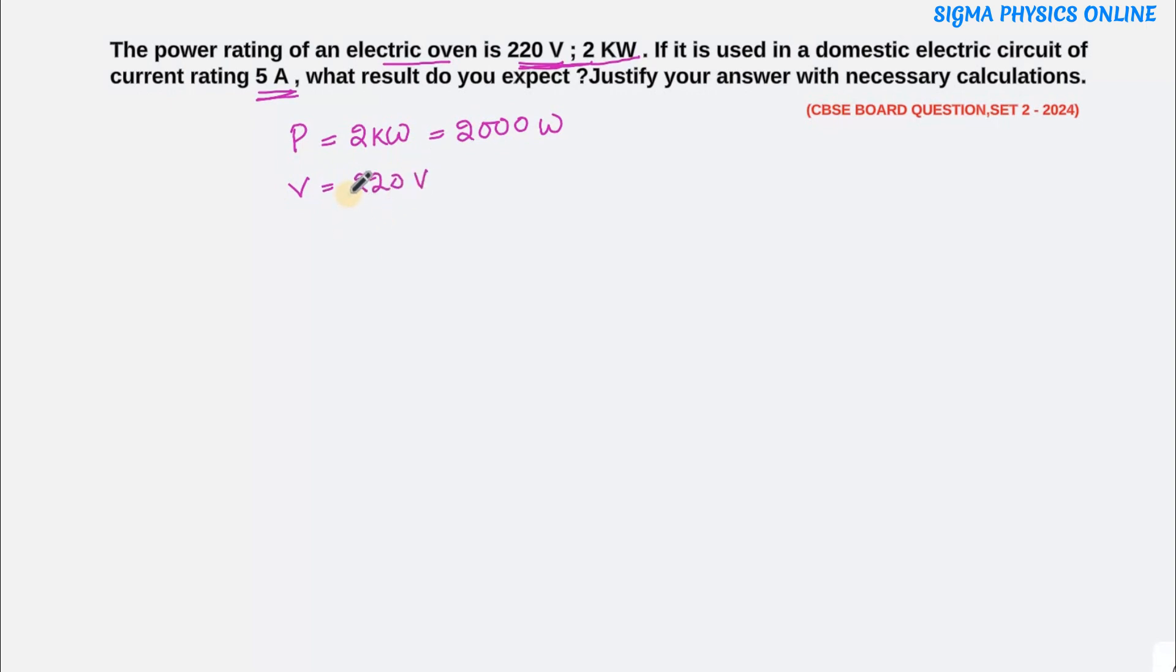Let's find out first what is the current drawn by the oven. Then we will see that if that amount of current is drawn by the electric oven, what will happen in the circuit. We will use the formula P equals V into I. So I will be P by V, which comes to be 9.09 ampere.